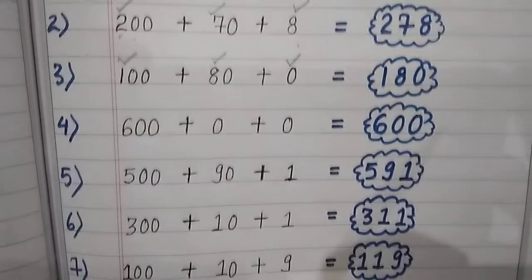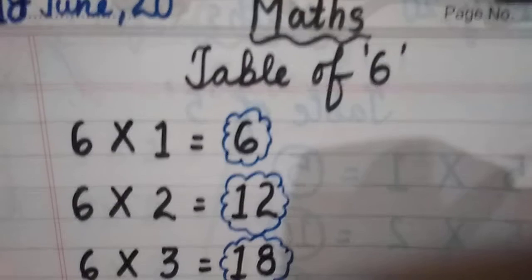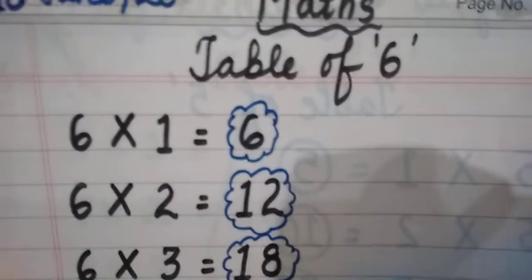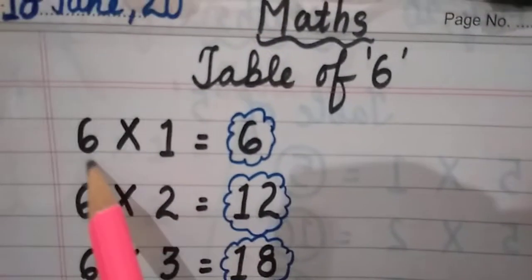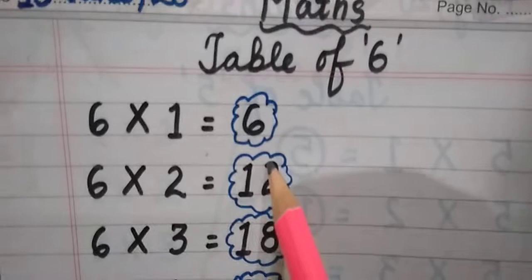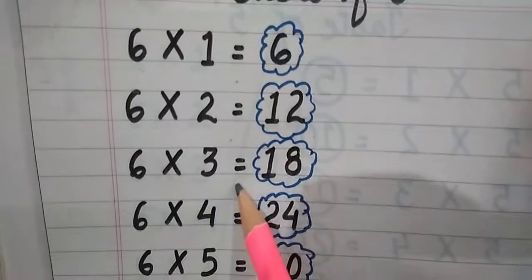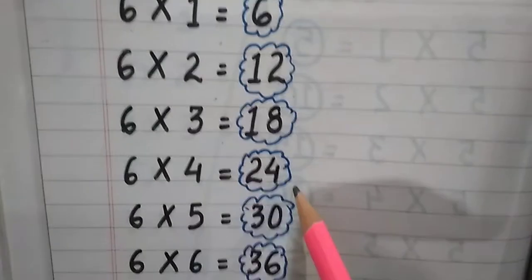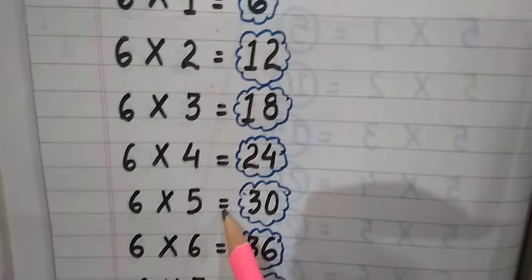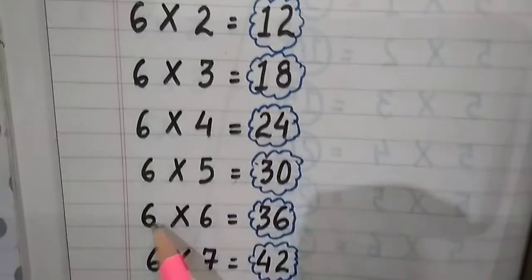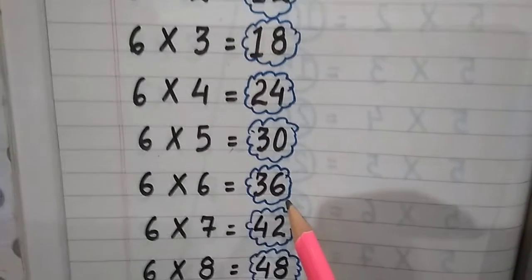We will do 6 table. So let's start. 6×1=6, 6×2=12, 6×3=18, 6×4=24, 6×5=30, 6×6=36.